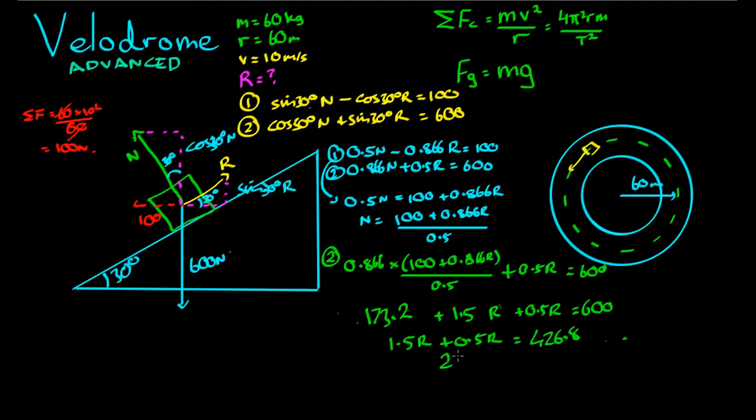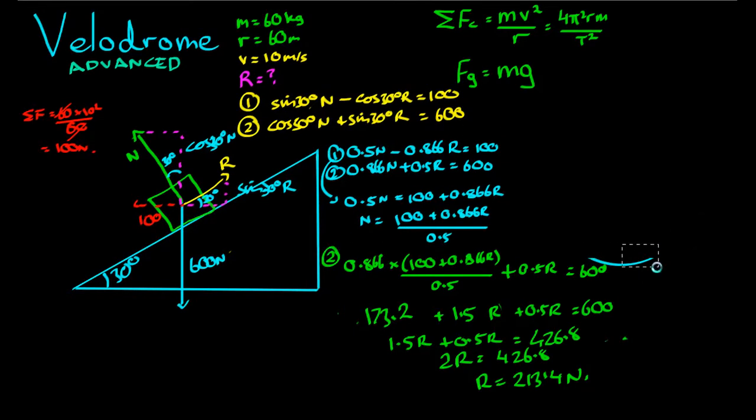And then if we add those together, that's a total of 2R equals 426.8. So R equals 426.8 divided by 2, 213.4 newtons. So quite a bit of decimal work there. I'm just going to check. That seems like a common sense answer. There is a way to check that answer, which we'll actually do now. Feel free to stop the video now, but I'm going to go through how we can check that answer.